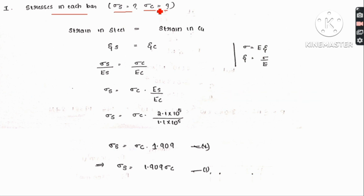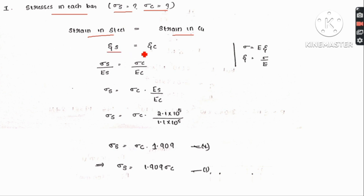Since the two sections — steel and copper — are subjected to the same deformation, the strain in steel is equal to the strain in copper: epsilon_s equals epsilon_c. We know that epsilon equals sigma divided by E (stress divided by Young's modulus), so epsilon_s equals sigma_s divided by E_s.